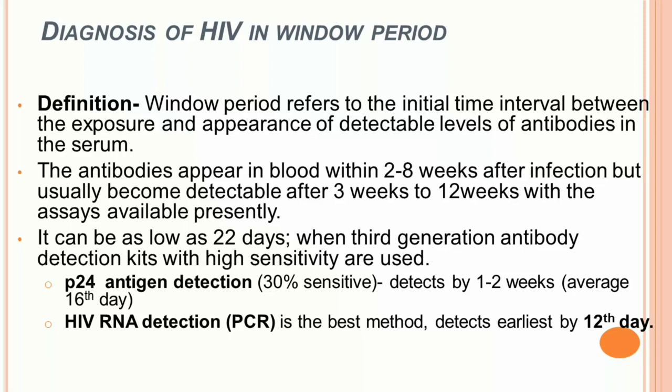The window period refers to the initial time interval between exposure and the appearance of detectable antibody levels in serum — different from the incubation period, which relates to the appearance of clinical symptoms. In HIV, antibodies appear in blood within 2-8 weeks after infection but usually become detectable after 3 to 12 weeks with currently available assays. Tests for diagnosing HIV during the window period include P24 antigen detection and HIV RNA detection (PCR-based), which is the best method — capable of detecting HIV as early as the 12th day of infection.